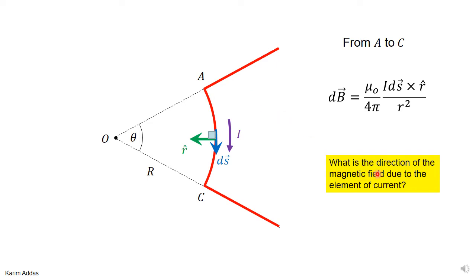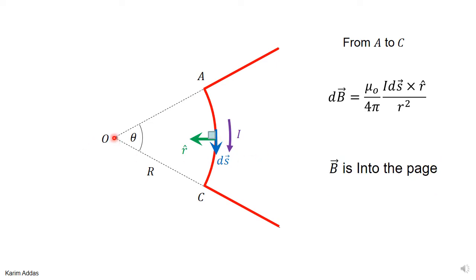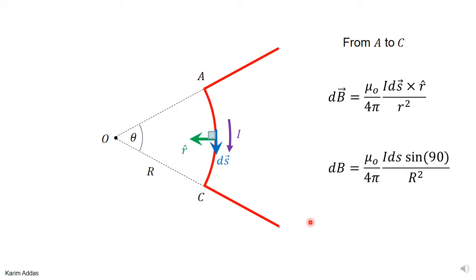The direction of the magnetic field due to each current element is found from ds cross r-hat, which points into the page. So the magnetic field at point O is into the page for every element along the arc, and the total field is into the page. For the magnitude, sin(90°) = 1, so the angle issue goes away entirely, which further simplifies the problem.